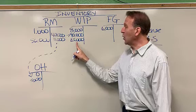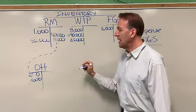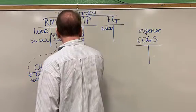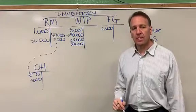Let's say that our direct labor is $25,000. So I add $25,000 into work in process. So that's labor costs going in.